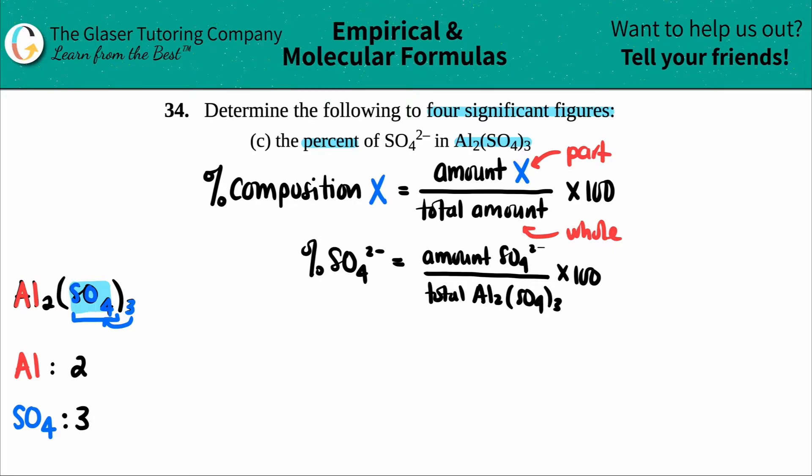Now we take these numbers—the two aluminums and three sulfates in the compound—and multiply them by the molar masses. That's where the periodic table comes in. You can round if you want. I'm going to write the exact numbers from my periodic table. Each aluminum is 26.998, and that's grams per mole.